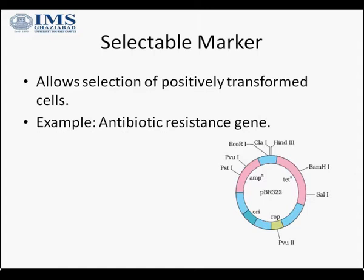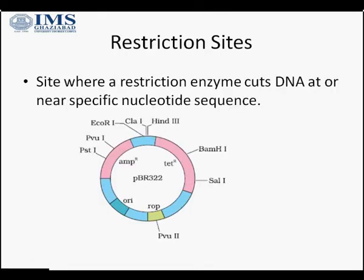The second essential feature is selectable markers. These are carried by the vector and allow selection of positively transformed cells — meaning we need to differentiate between recombinant cells and non-recombinant ones. For example, antibiotic resistance genes serve as selectable markers. As you can see in this figure, pBR322 is a vector that has selectable markers like the ampicillin resistance gene and the tetracycline resistance gene.